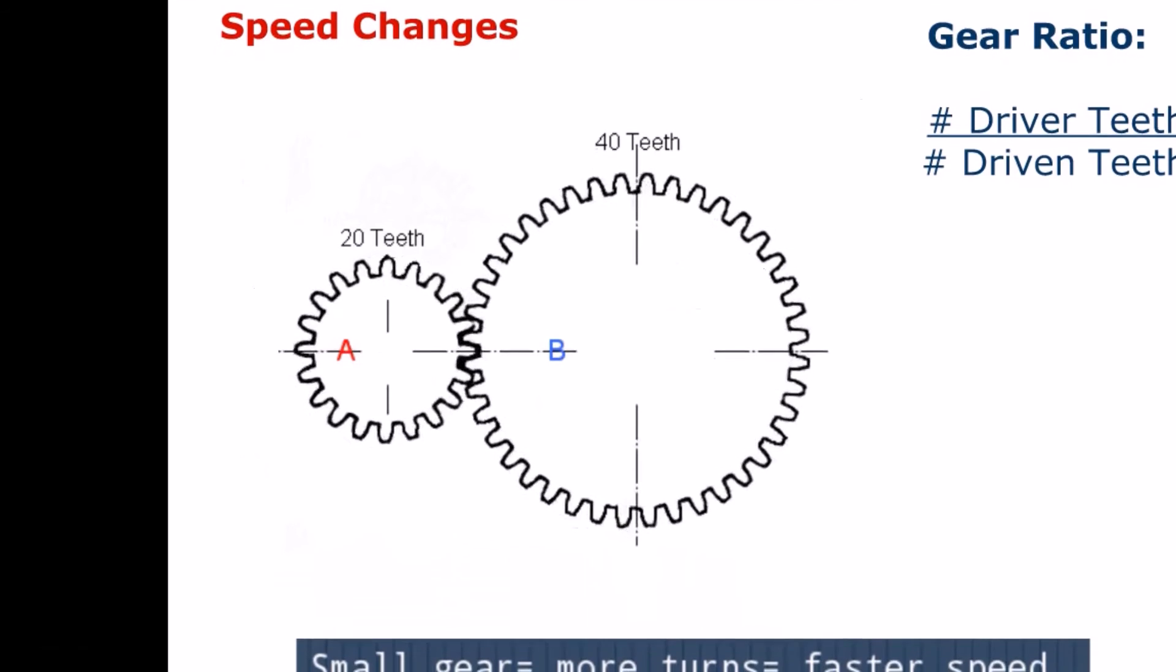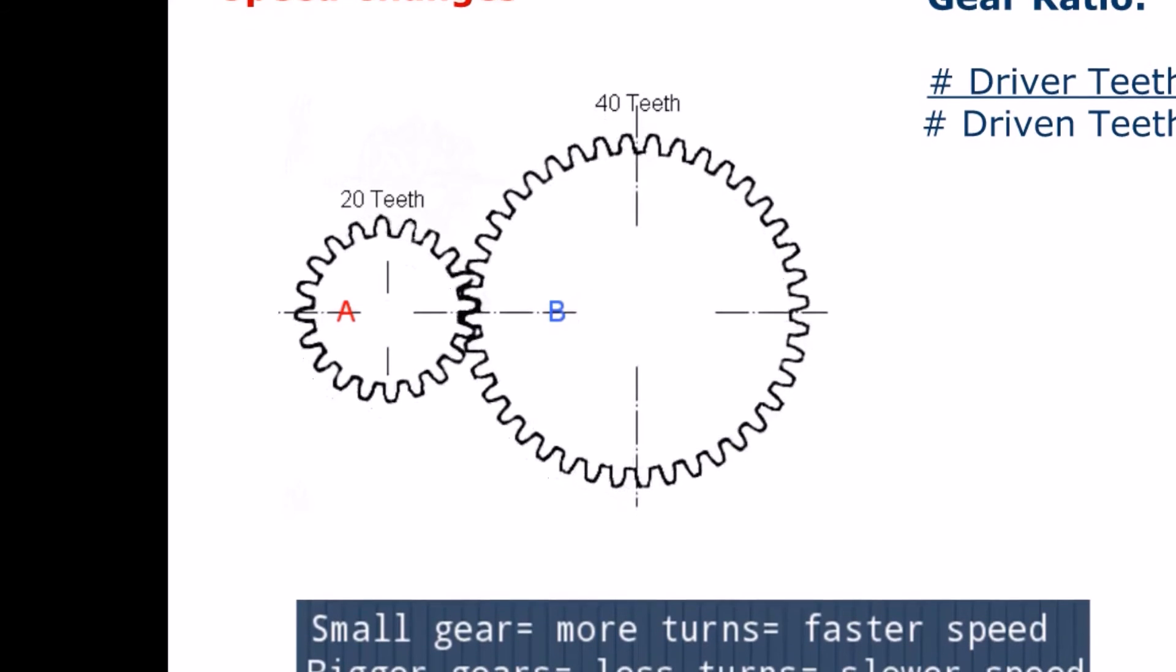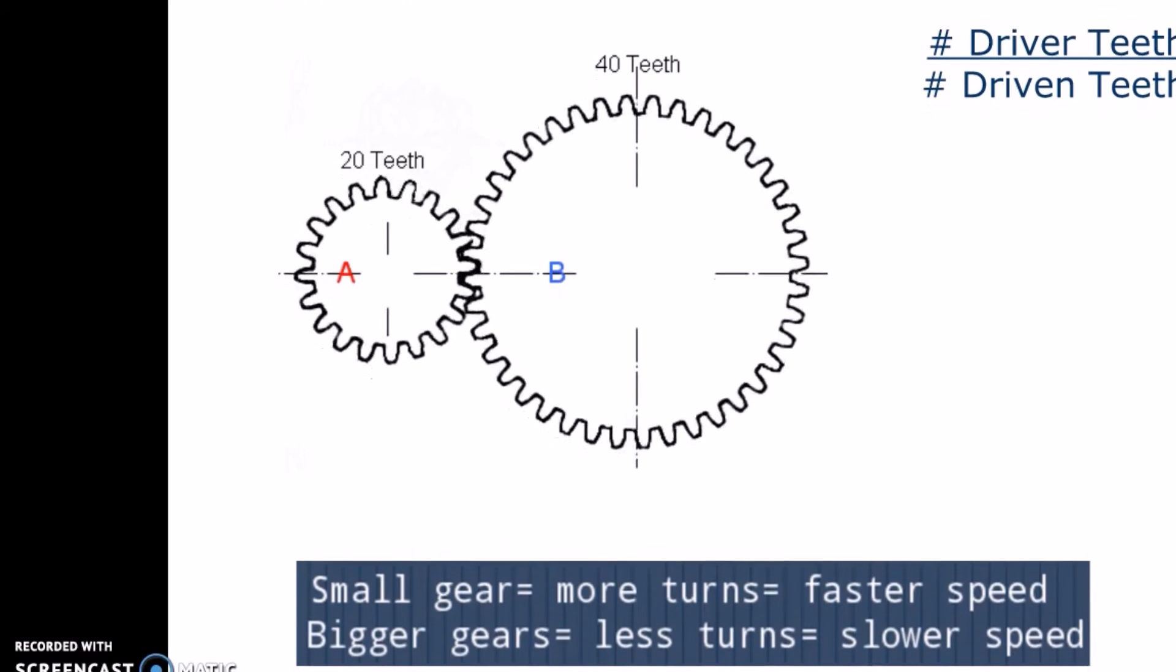Now, there's a general rule that the smaller the gear, the more turns it will make and the faster its speed.